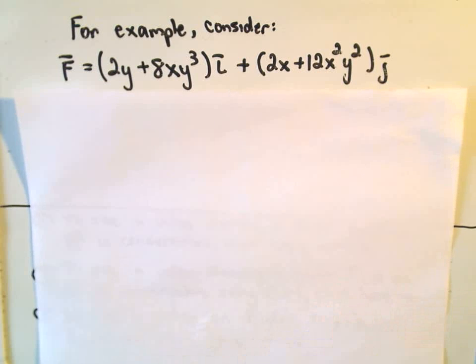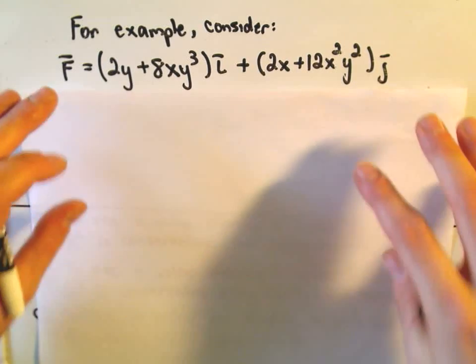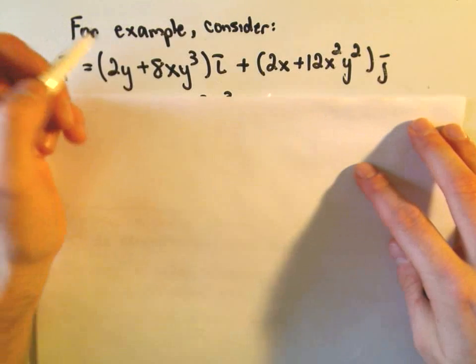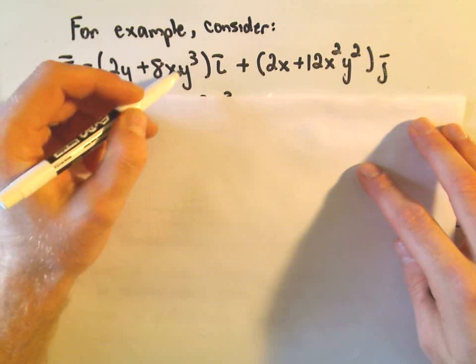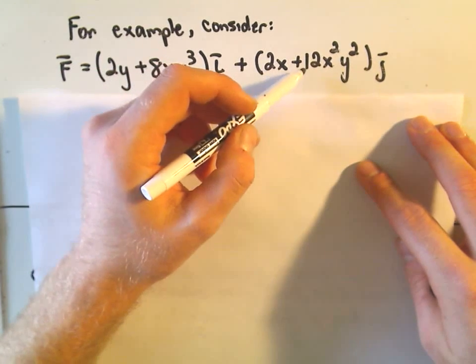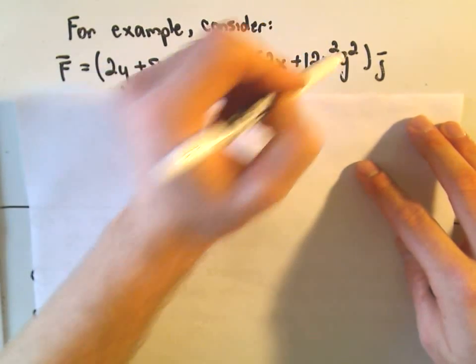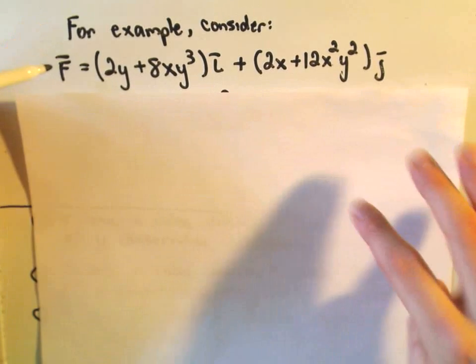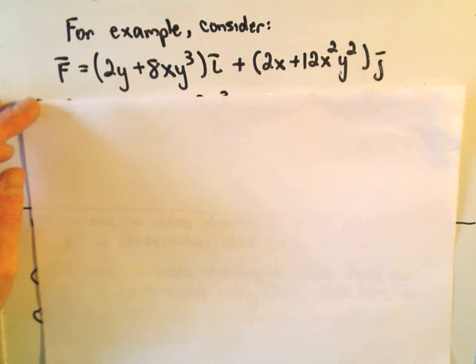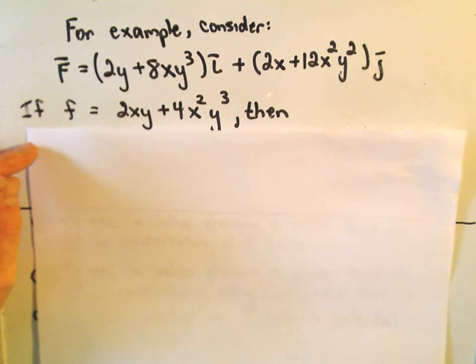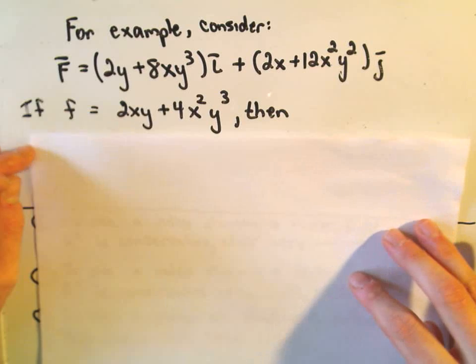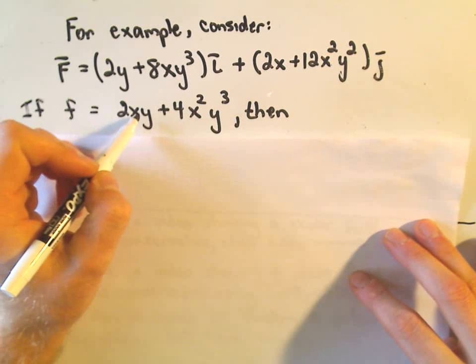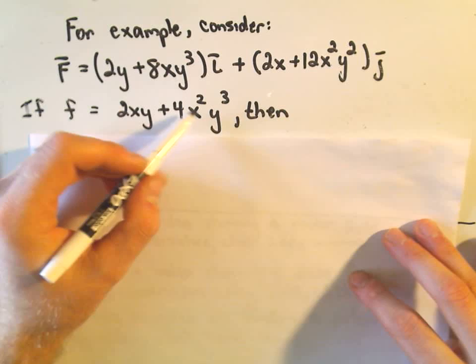For example, suppose we have the vector field given by 2y plus 8xy cubed times i, plus 2x plus 12x squared y squared j. Maybe we want to know if this vector field is conservative. Well, one thing — if you could simply find a scalar function. I've got a little scalar function here: little f is going to be 2xy plus 4x squared y cubed.